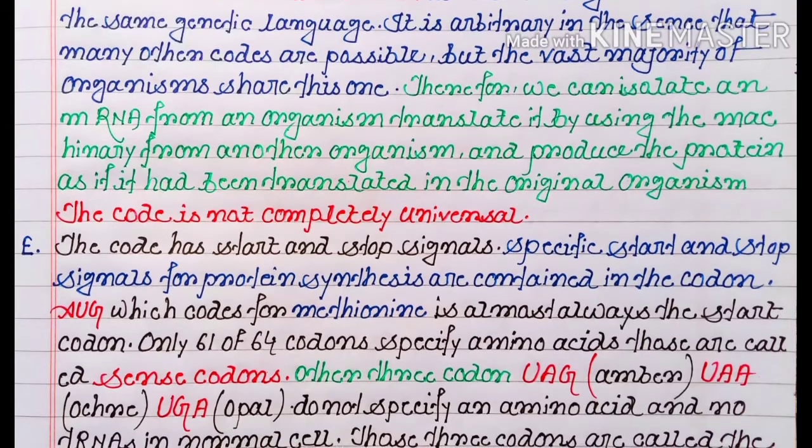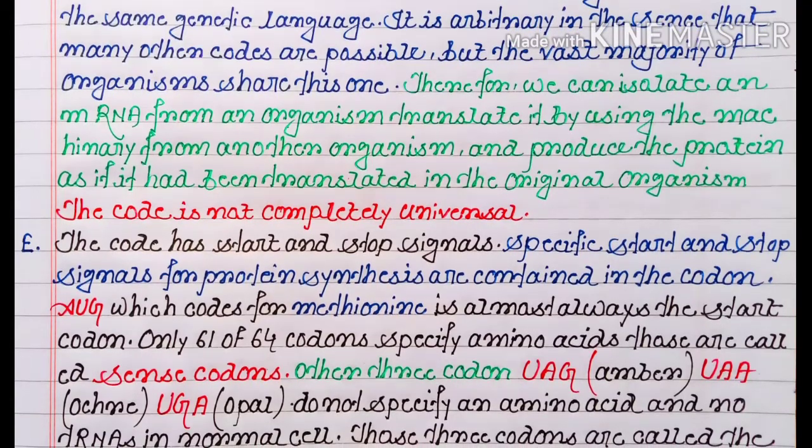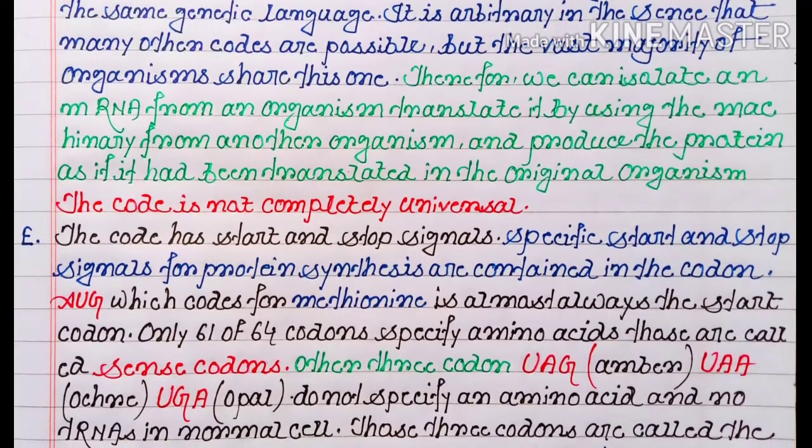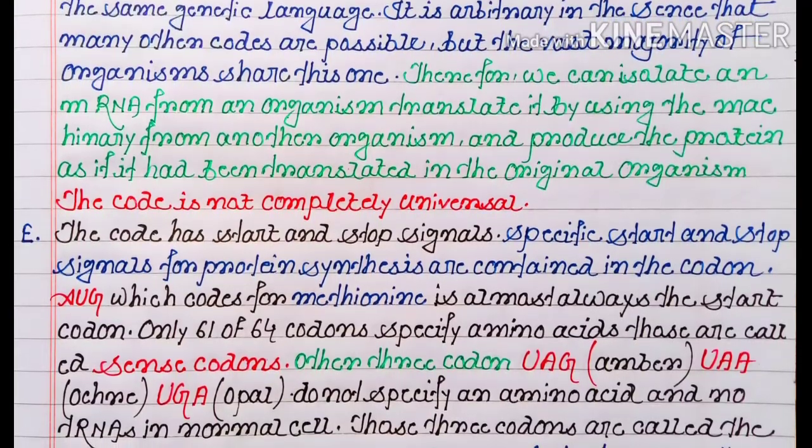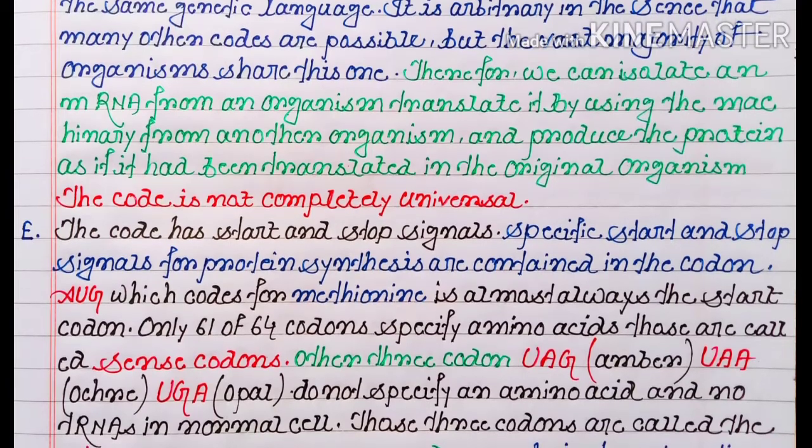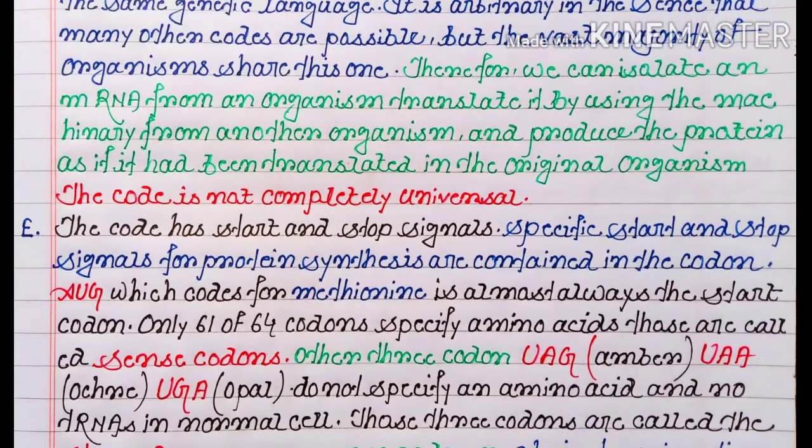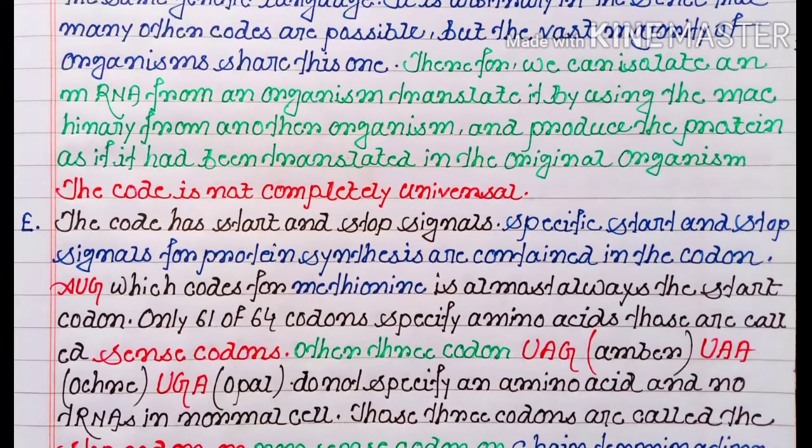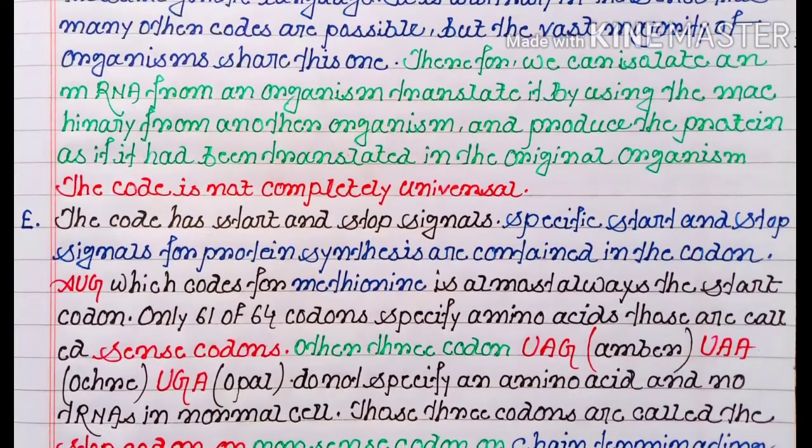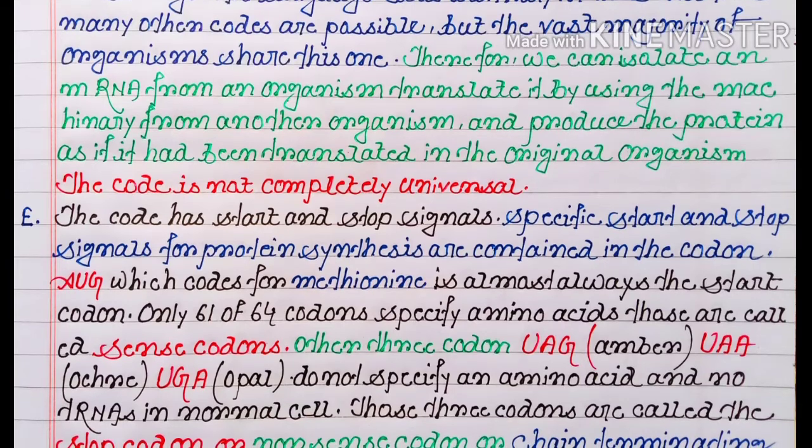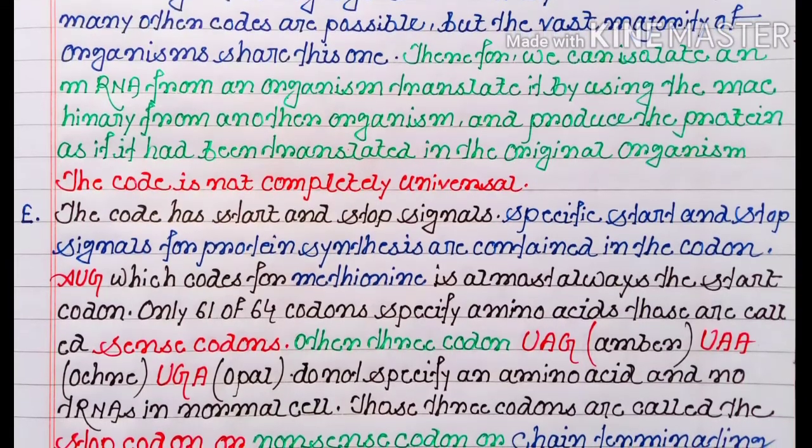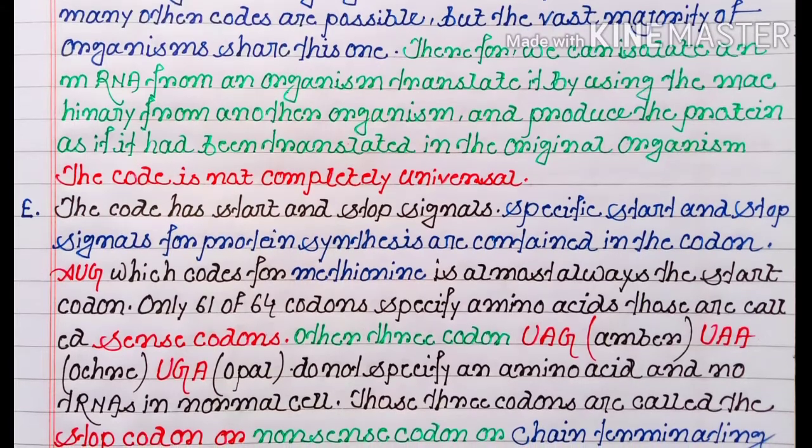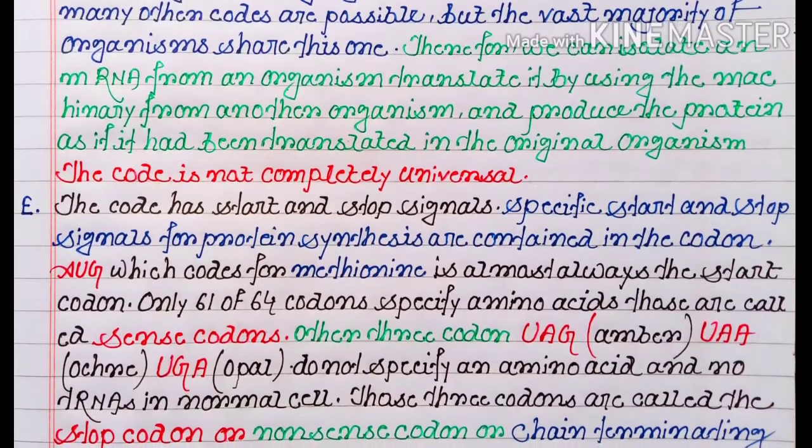The code is not completely universal. Next point: the code has start and stop signals. Specific start and stop signals for protein synthesis are contained in the codon. AUG, which codes for methionine, is almost always the start codon.